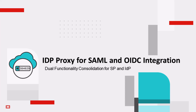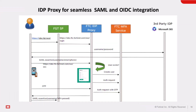IDP proxy for seamless SAML and OIDC integration is another cool feature within FortiToken Cloud. A SAML IDP proxy serves as a bridge or gateway connecting a federation of SAML IDPs with a federation of SAML service providers. Managing multiple SPs and IDPs can be very challenging. FortiToken Cloud's IDP proxy simplifies this process by seamlessly integrating with SAML and OIDC protocols — acting as a standard IDP for service providers, and functioning as a service provider for identity providers. This dual functionality consolidates capabilities for both roles.